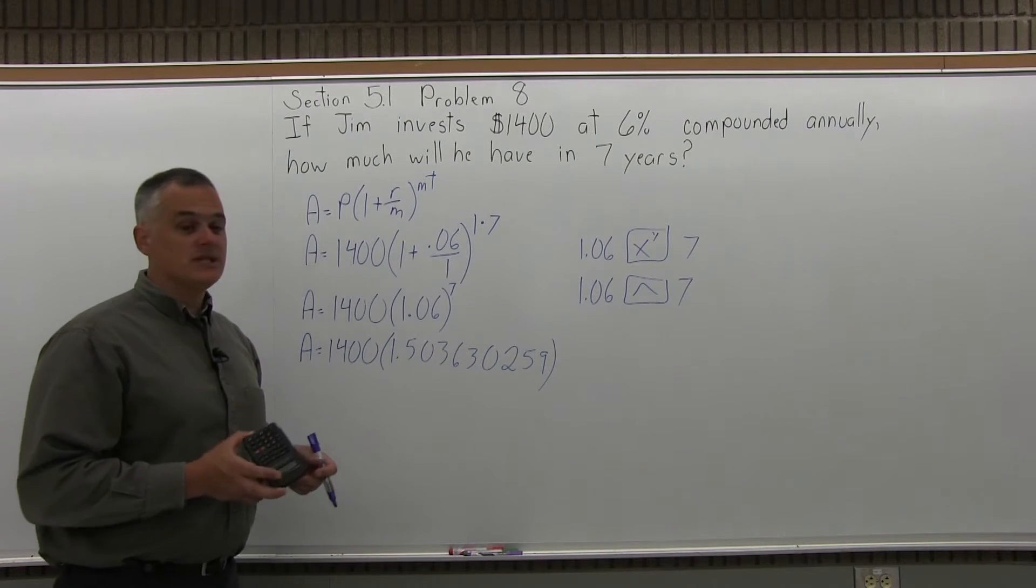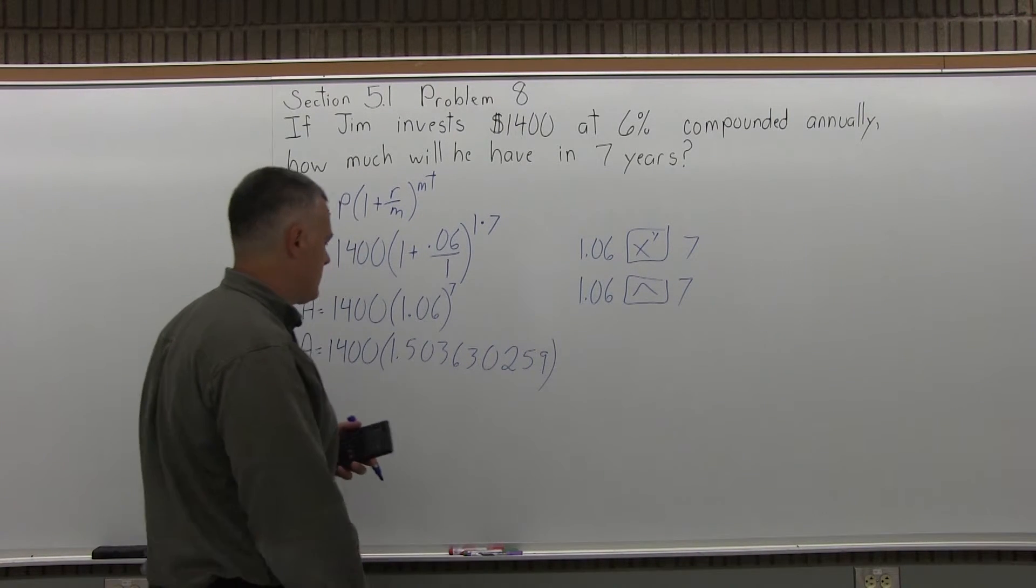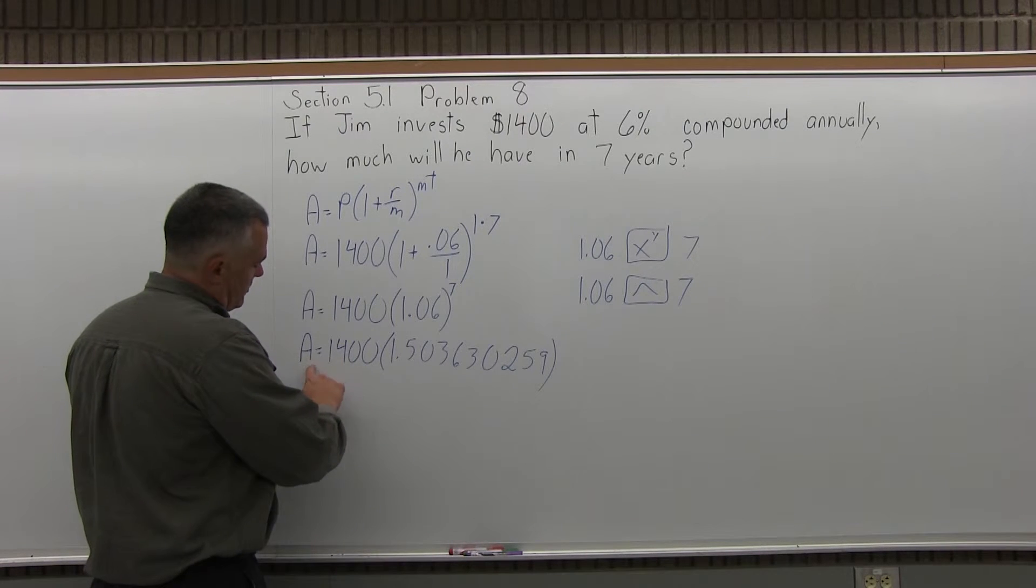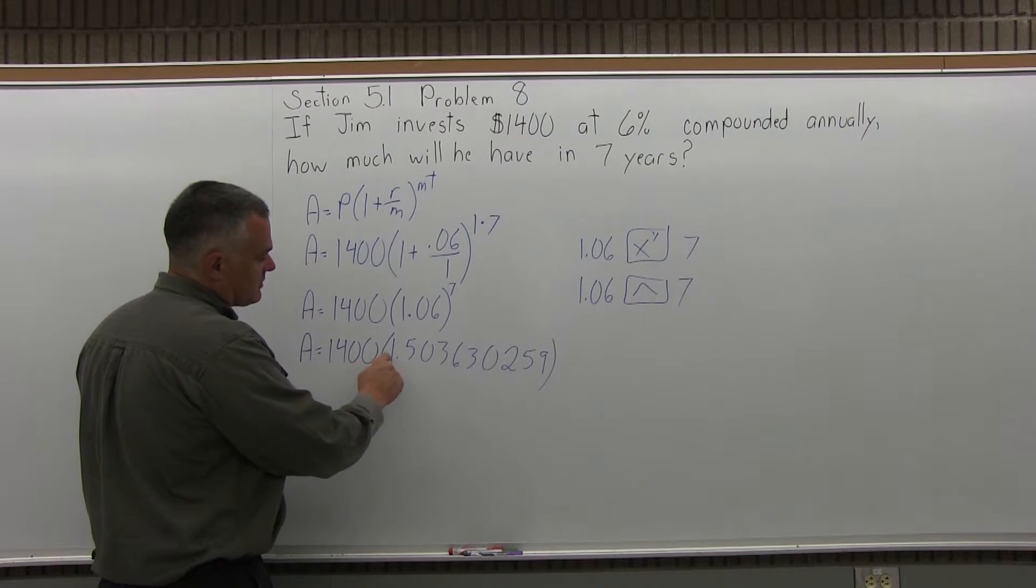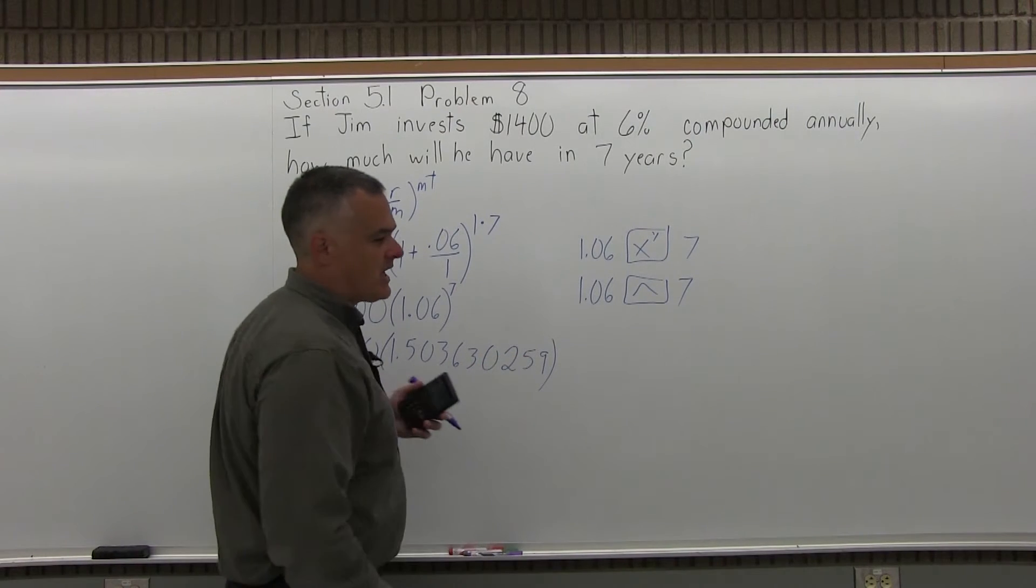I'm going to leave all those decimals in for now, and I'm just going to round it to two places at the very end. So now my formula is A equals 1,400 times 1.503630259.